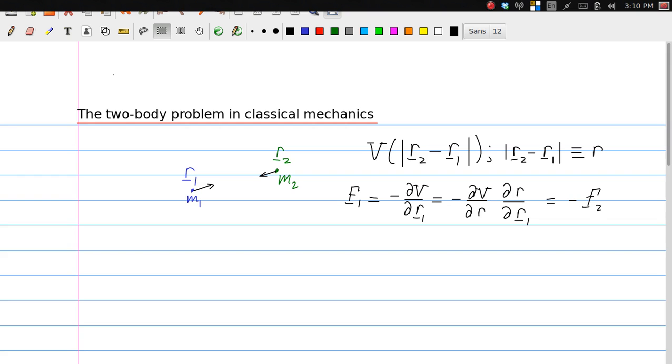The two-body problem in Classical Mechanics describes the motion of two particles orbiting around each other. The particles are called m1 and m2, those are their masses. The positions are r1 and r2, and they interact via a potential which only depends on the distance between the two particles, so that's r2 minus r1, length of that vector. And that vector will occur more often, so we call it r, and its length is called r without a vector sign. The force from particle 1 is minus dV dr1, and it can easily be shown that this is minus f2 in agreement with Newton's third law.